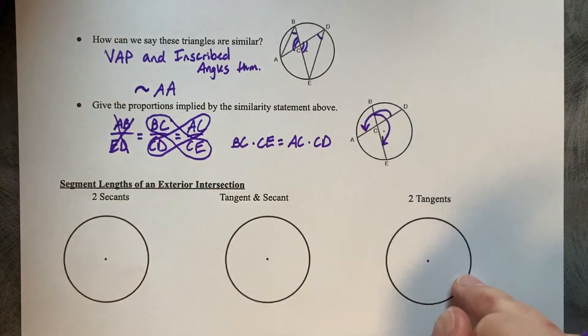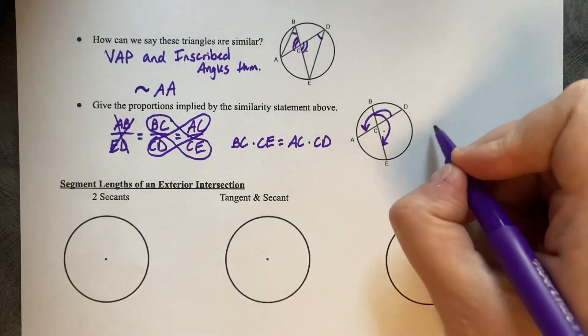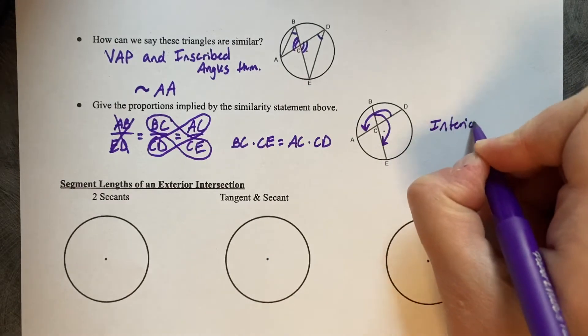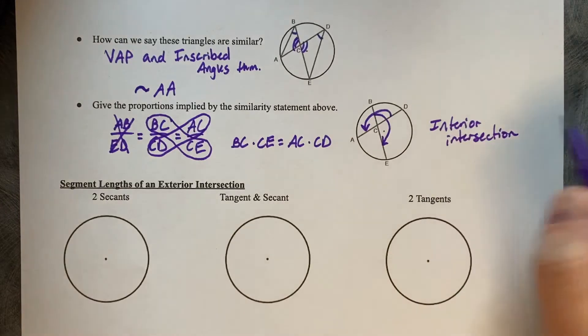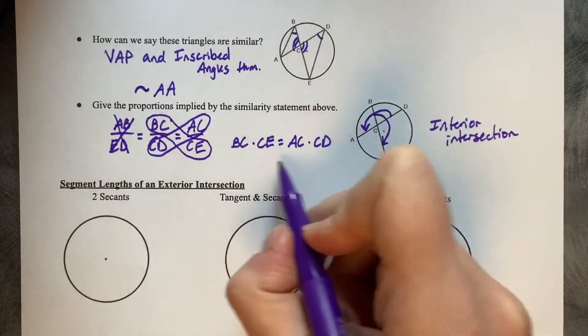That's for an intersection that's on the inside. This is an interior intersection. You just multiply the two segments together and set them equal.